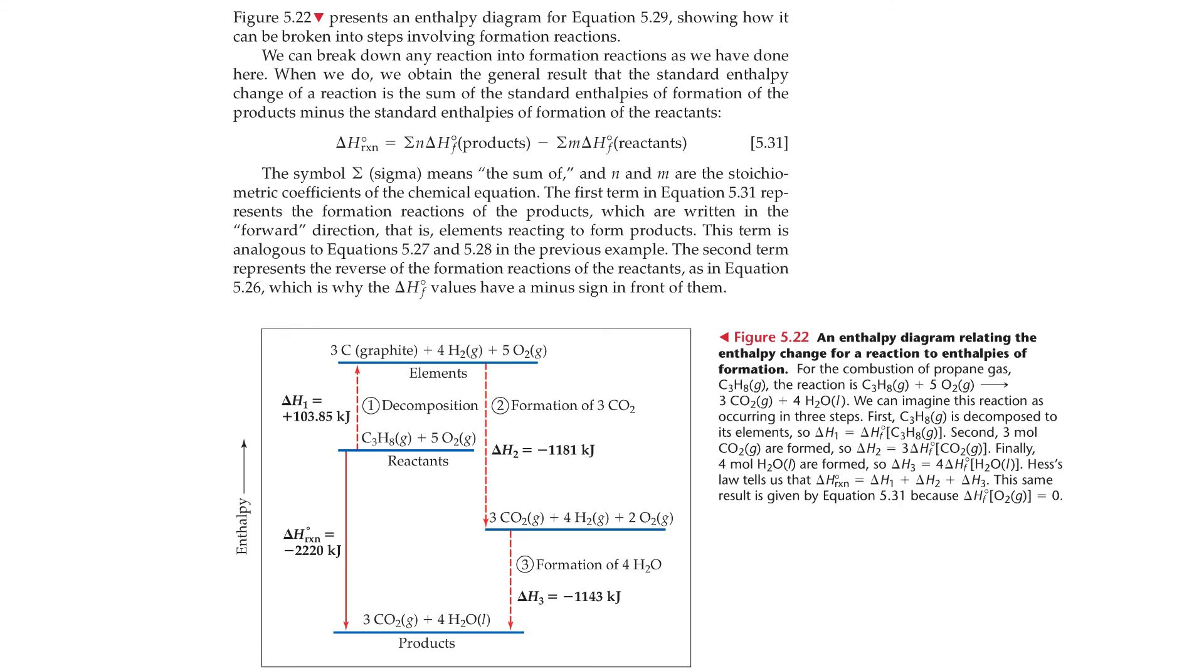The symbol sigma means the sum of an N and M or the stoichiometric coefficients of the chemical equation. The first term in equation 5.31 represents the formation reactions of the products, which are written in the forward direction, that is, elements reacting to form the products. This term is analogous to equations 5.27 and 5.28 in the previous example. The second term represents the reverse of the formation reactions of the reactants, as in equation 5.26, which is why the heat of formation values have a minus sign in front of them.